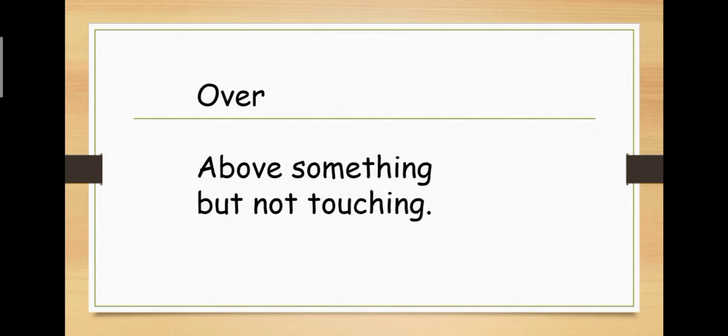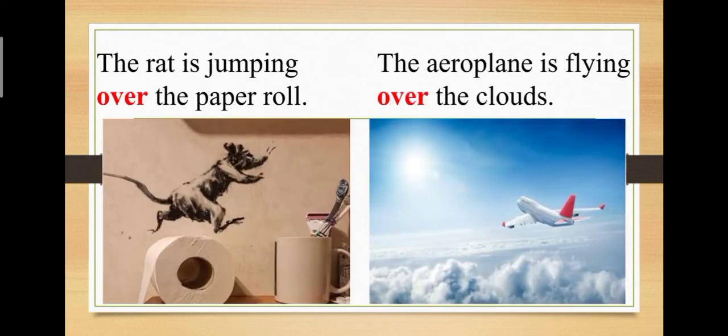Next is over. Over mean children, when something is above something and also it is not touching. Yaani, koi chiz, jab dousri chiz ke upar hai aur woh touch nahi kar rahi hai. Let's see an example. The rat is jumping over the paper roll. You can see in the picture, the rat is not touching the paper roll. It is just jumping over it. So, the rat is jumping over the paper roll. In the second picture, we can see an aeroplane, we can see clouds and are they touching? No. And plane is above the clouds. So, we'll say the aeroplane is flying over the clouds.